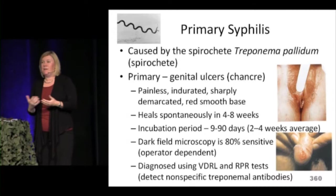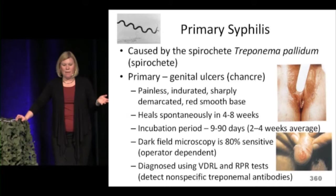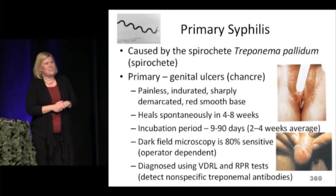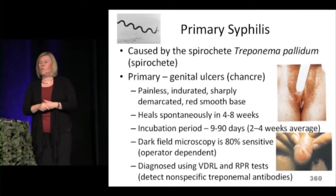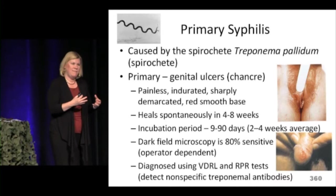To test for syphilis, you can send dark field microscopy to look for the spirochete, or send serum tests — RPR or VDRL are the most commonly used. These are sensitive but not specific, so a positive result must be followed up with a more specific confirmatory test.